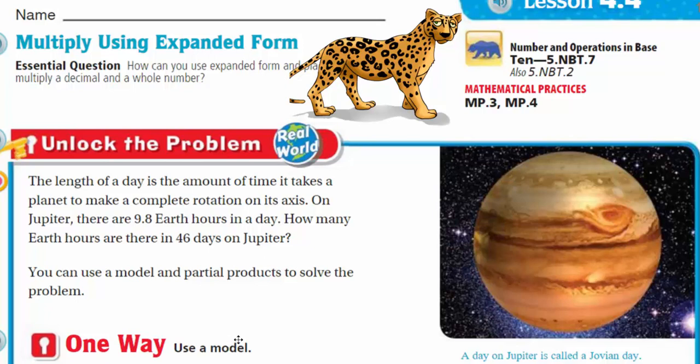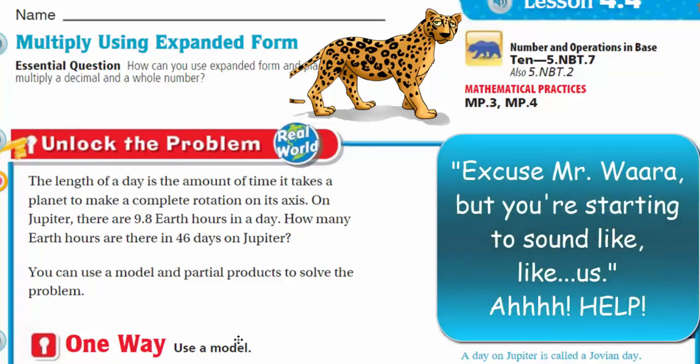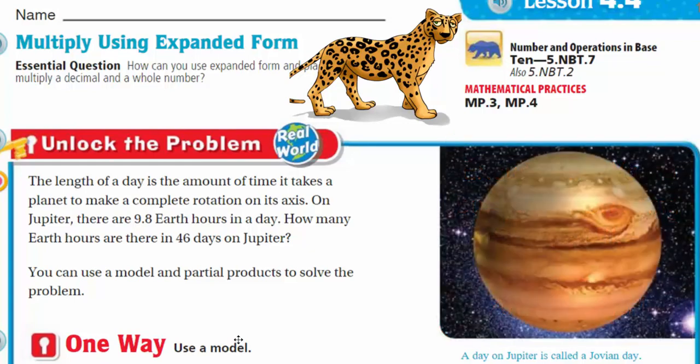Let's first start off with understanding the problem. With math, it's really all around us. And with this problem, we know the Earth takes 24 hours to make that complete rotation on its axis. And now we have Jupiter. It's 9.8 Earth hours. That means that Jupiter is spinning so fast that after almost 10 hours, it's already completed a day.